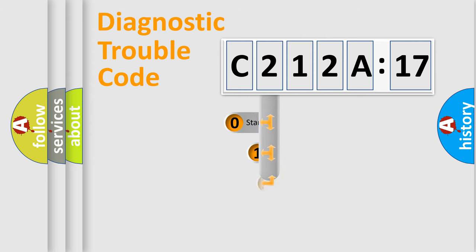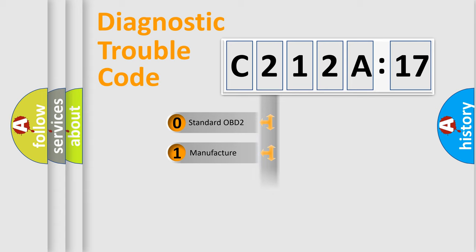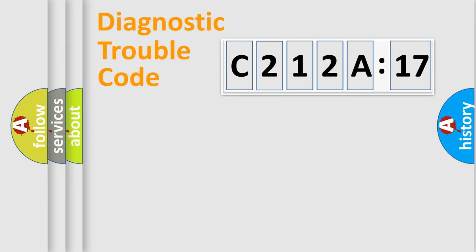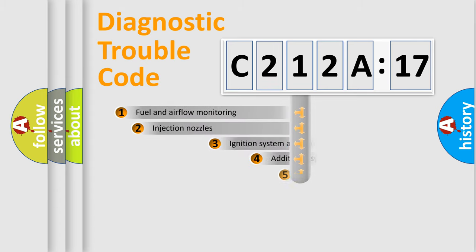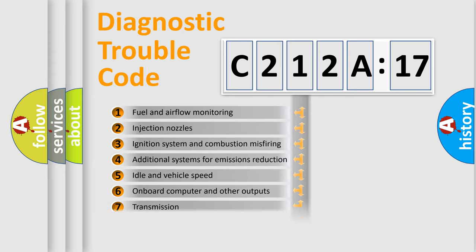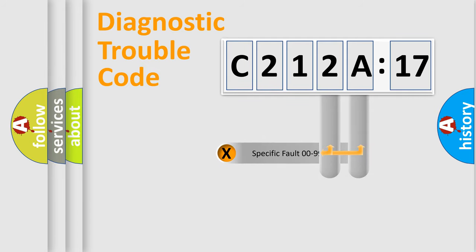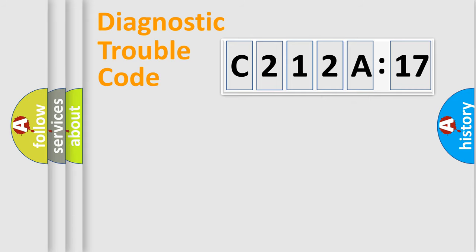This distribution is defined in the first character of the code. If the second character is expressed as zero, it is a standardized error. In the case of numbers 1, 2, or 3, it is a more specific, car-specific error expression. The third character specifies a subset of errors. This distribution is valid only for the standardized DTC code. Only the last two characters define the specific fault of the group.